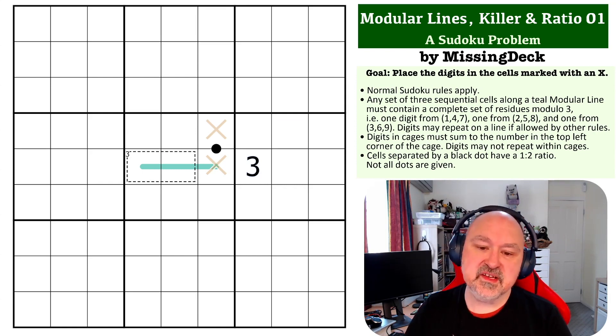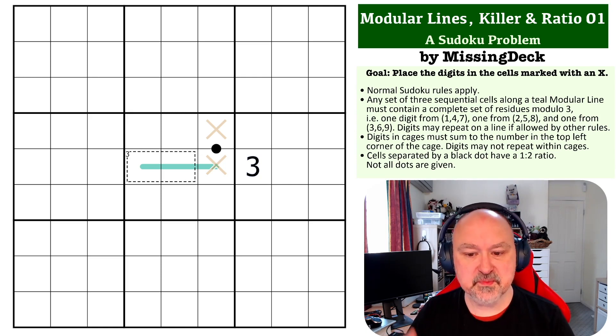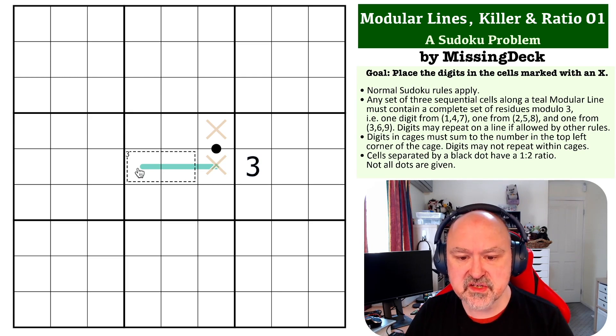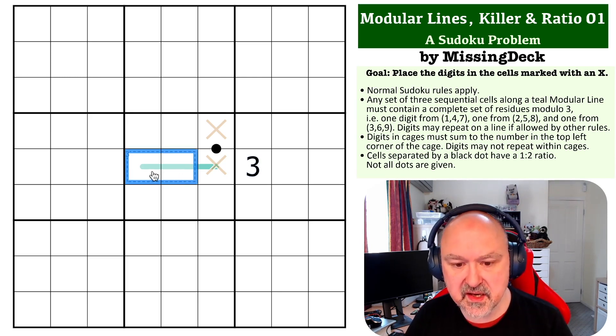Okay, so this one is actually quite an easy problem and is basically designed as a very gentle introduction to modular lines. In the killer cage, the two-cell killer cage that sums to three, the only possible digits are one and two.